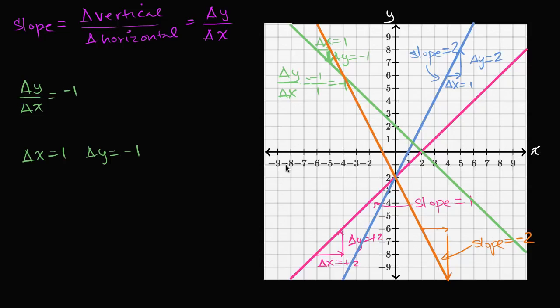Hopefully this gives you a little more intuition for what slope represents and how the number we use to represent slope lets you visualize how steep a line is. A very high positive slope means y increases fairly dramatically as x increases. If you have a negative slope, y actually decreases as x increases. The higher the slope, the steeper the increase; the more negative the slope, the more you decrease as x increases.